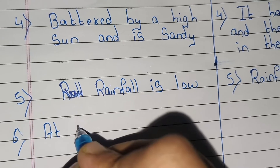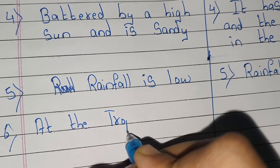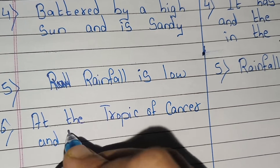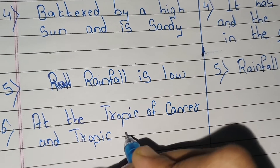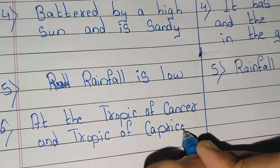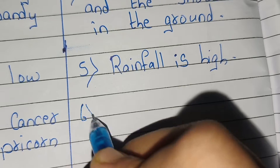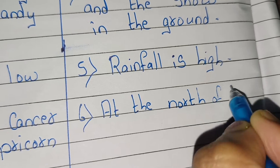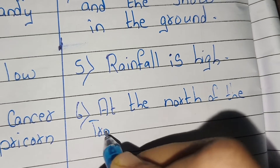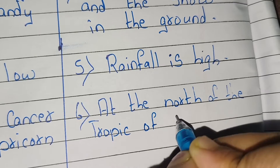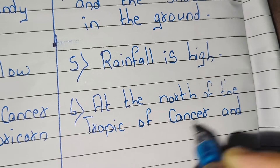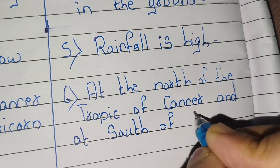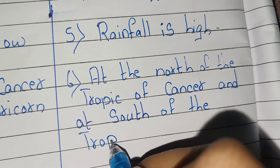Sixth point: hot deserts are located at the Tropic of Cancer and Tropic of Capricorn. Cold deserts are located to the north of the Tropic of Cancer and to the south of the Tropic of Capricorn.